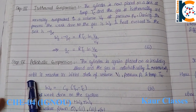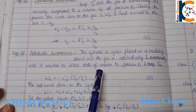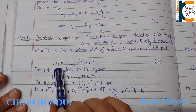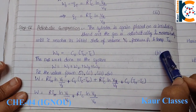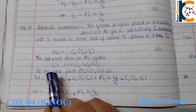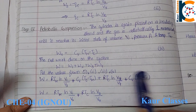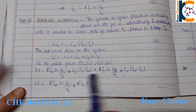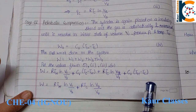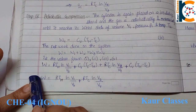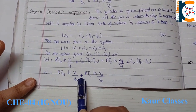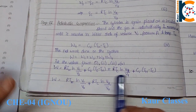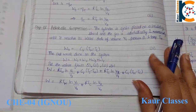Step four — adiabatic compression: the cylinder is placed on the insulating stand and the gas is adiabatically and reversibly compressed until it returns to its initial state with volume V1 and pressure P1. Work done W4 = C_v(T_H − T_C). The total work done W equals the sum of W1, W2, W3, and W4, giving: W = RT_H log(V1/V3) + RT_C log(V3/V4).